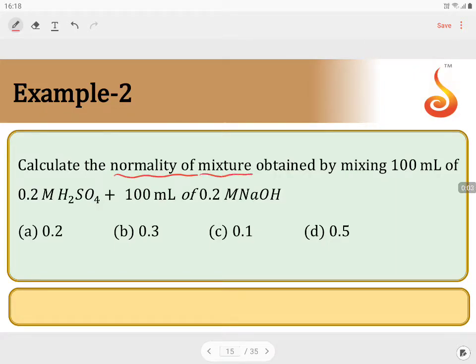Calculate the normality of the mixture obtained by mixing 100 ml of 0.2 molar H2SO4 and 100 ml of 0.2 molar NaOH. So when you take this particular problem, it is an acid plus base reaction.